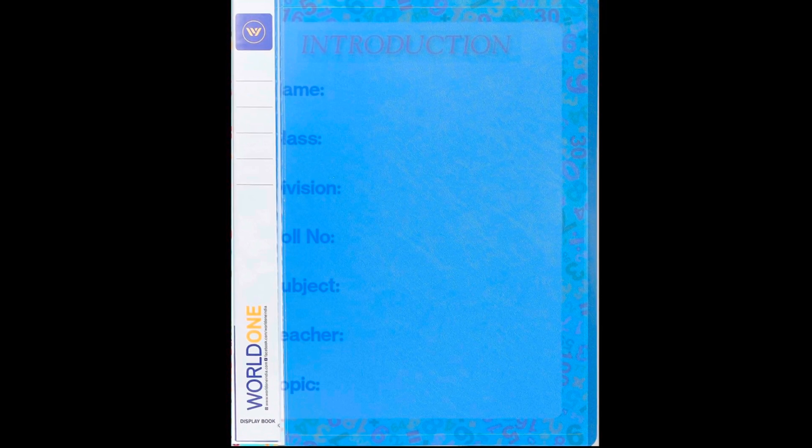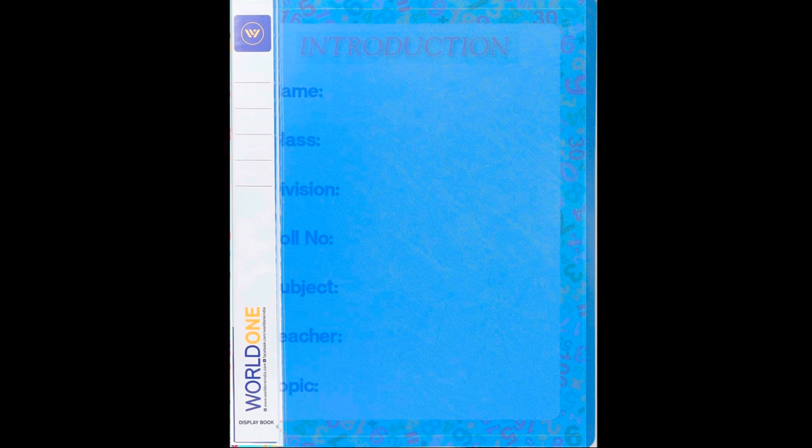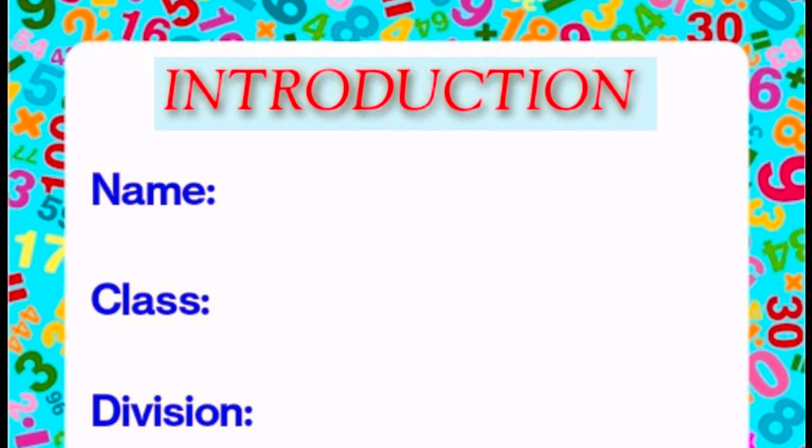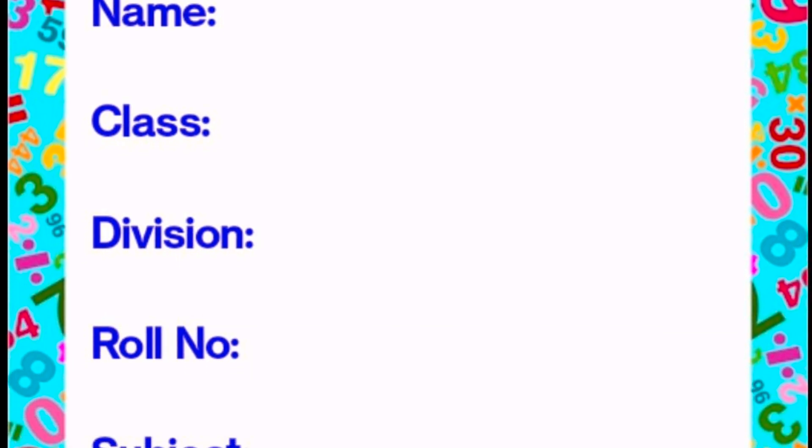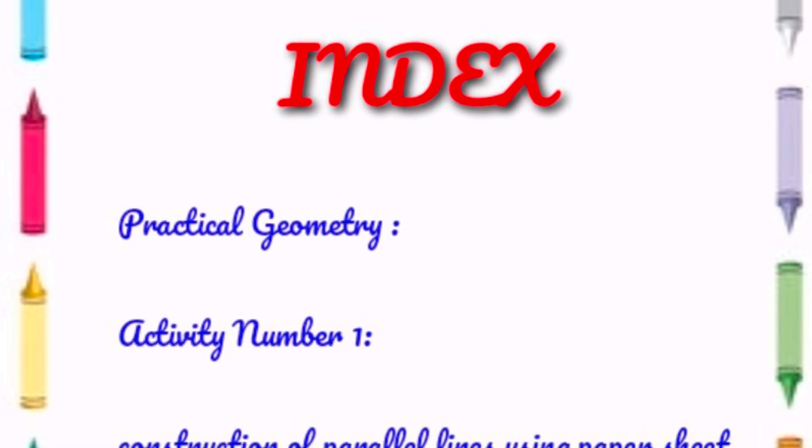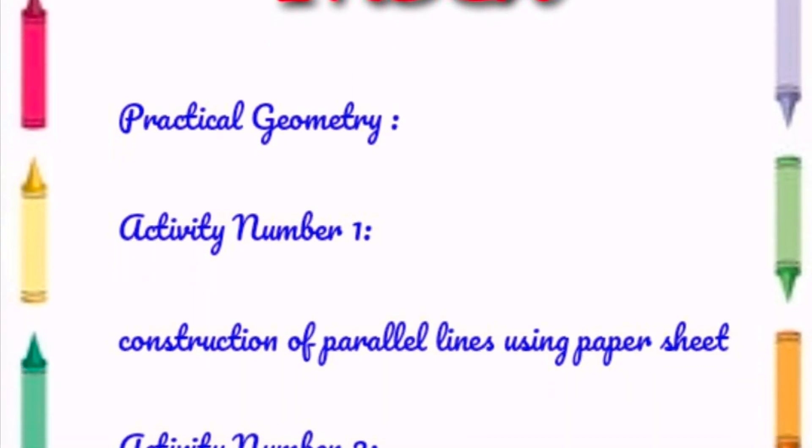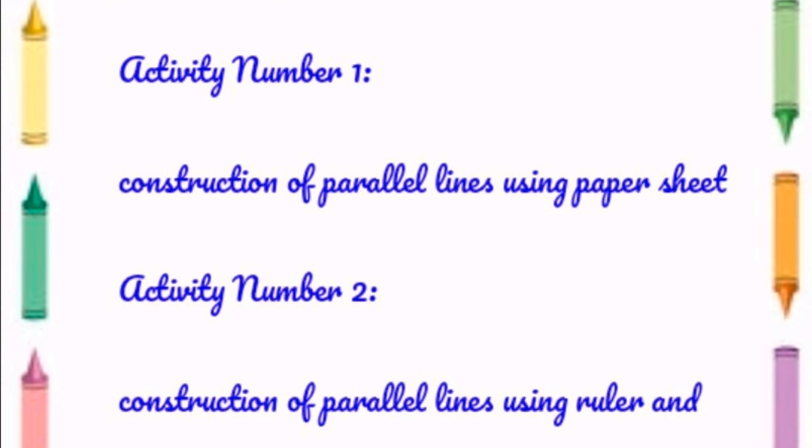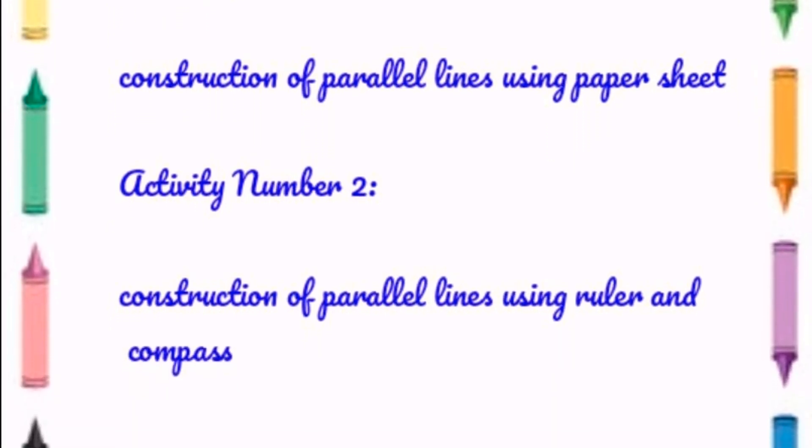Hi friends, today I'm going to show you a maths project. See the first page of the project - that's the introduction: name, class, division, roll number, subject, teacher, and topic. Now the second page is the index: practical geometry, activity number one, and then activity number two.